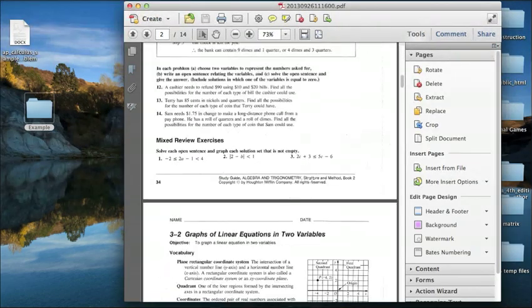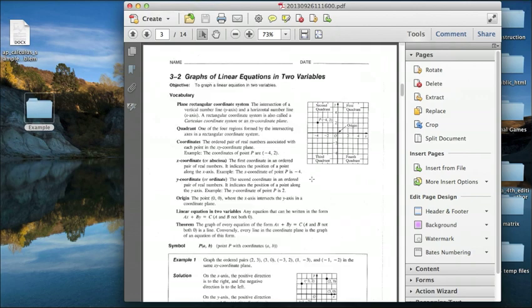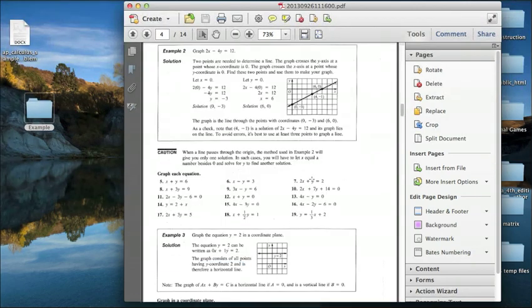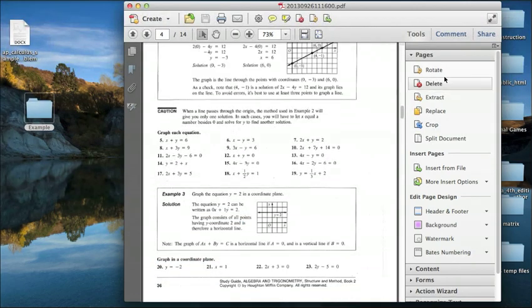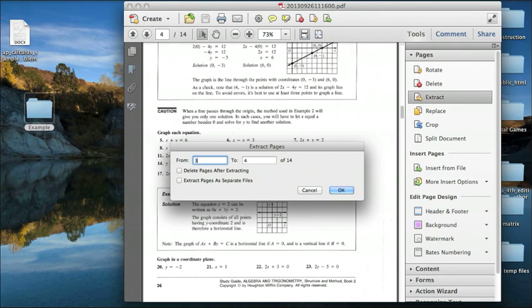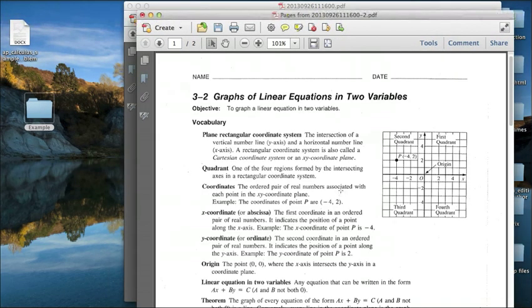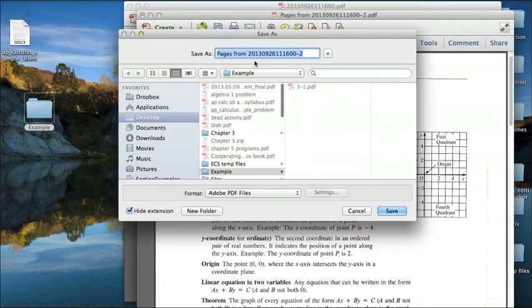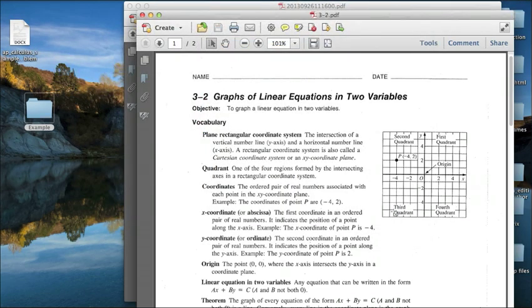Next, I go to page 3, and now I want page 3 and page 4 in its own file, so I'm going to extract from 3 to 4. OK. Save this as Section 3-2 under the same folder Example. And now I can delete that file.